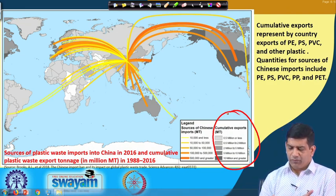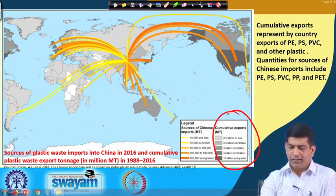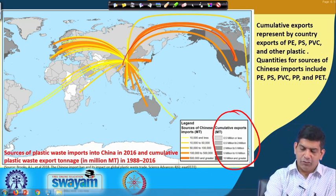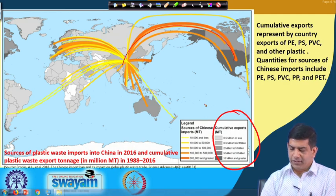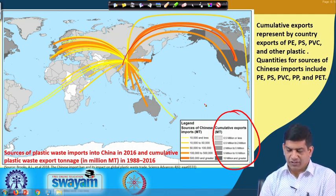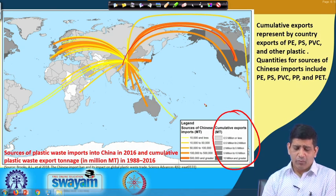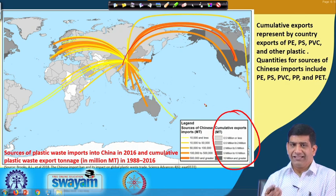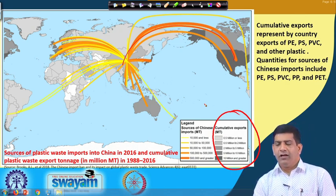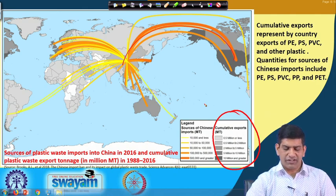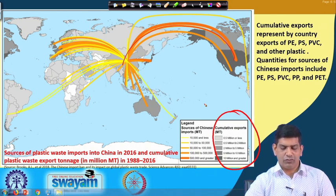These are the cumulative export values, and the sources of Chinese imports are shown as arrows or lines — for example, imports coming from the US to China. You can see that most of the developed countries are covered in terms of waste coming from developed countries to China; the thicker the line, the more waste, and the thinner the line, the less waste. This represents the sources of plastic waste imports into China in 2016 and the cumulative plastic waste export tonnage from 1988 to 2016, from the Brooks et al. paper.